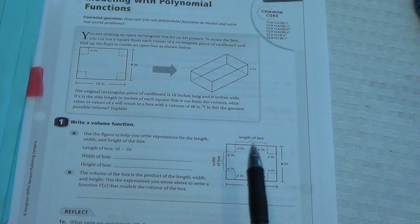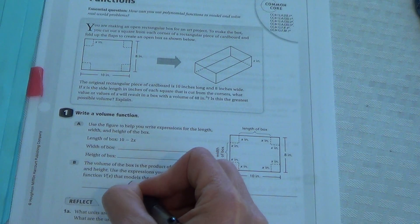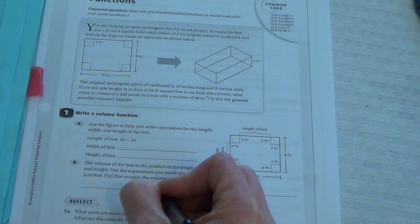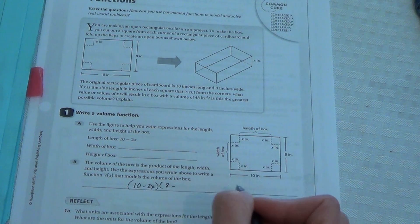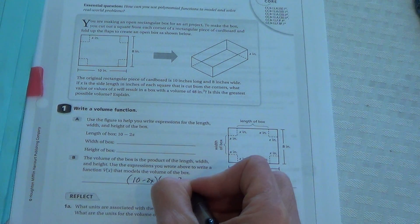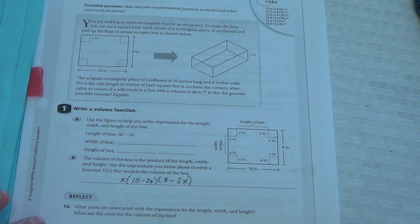So the volume, you would take all three of those in parentheses. You would go 10 minus 2x times 8 minus 2x, and times your x. I like to put the x in the front.